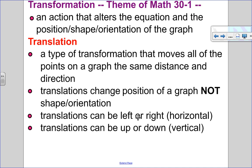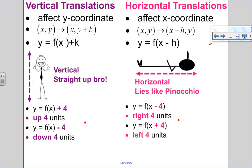Translations can be left or right — that's what we call a horizontal translation — or up and down, which is what we call a vertical translation. A vertical translation runs up and down, so because it runs up and down, it only affects the y-coordinate.